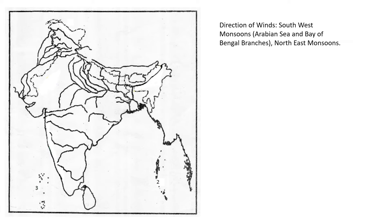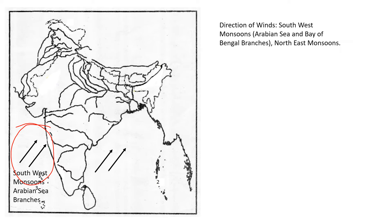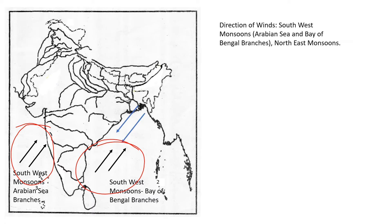Next is direction of wind — southwest monsoon. When it is asked for the Arabian Sea branch, you have to take it in Arabian Sea only. Then we have the Bay of Bengal branch — same thing, that should be in Bay of Bengal only. Where it is northeast monsoon, you can take that parallel along the eastern coast and draw it. That is your northeast monsoon. You can use black color even for northeast monsoon.